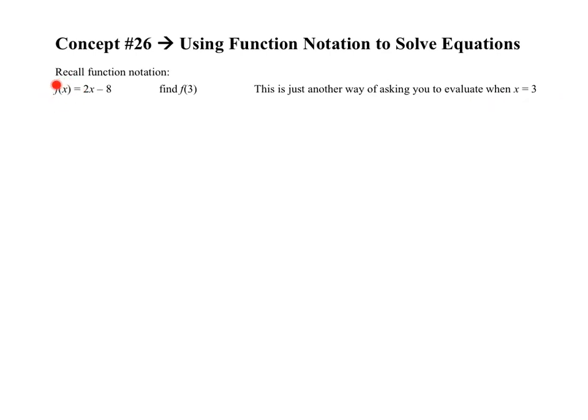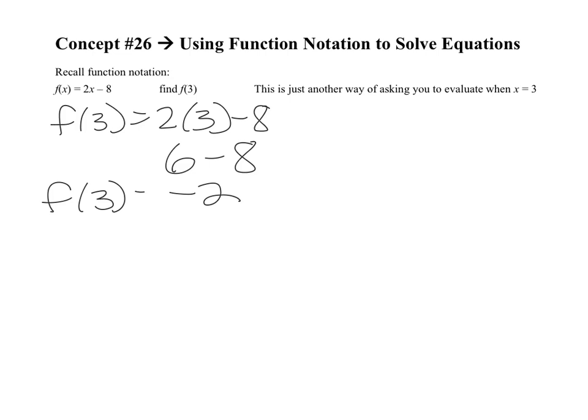So like this, again, is just a notation, and this is the rule. So 2x minus 8 is the rule. I'm asking you to put in 3. So it looks like this: f of 3 equals 2 times 3 minus 8. So you just replace the x. So 2 times 3 is 6 minus 8, and 6 minus 8 is negative 2. So your final answer then will be f of 3 equals negative 2.